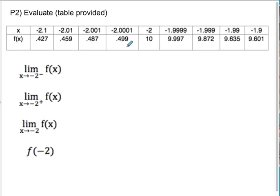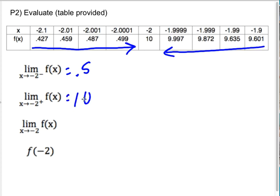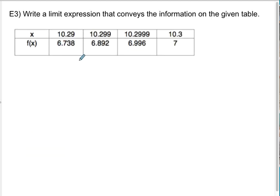Okay, let's try the next one. So as we approach negative 2 from the left, these numbers are just a little bit more negative than negative 2. It seems like I'm approaching 0.5. As I approach from the right, it seems like these numbers are approaching 10. They get closer and closer to 10. The double-sided limit does not exist because 0.5 doesn't equal 10. But the actual function's value is definitely 10.